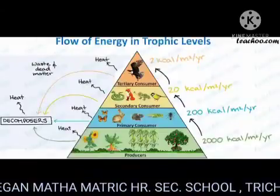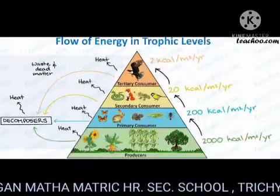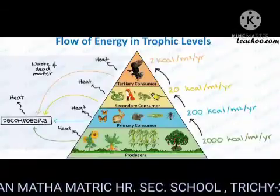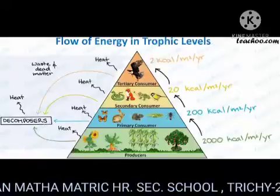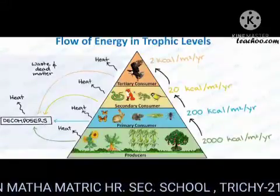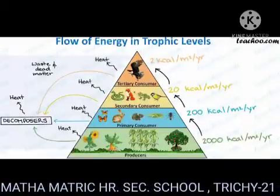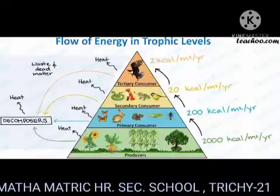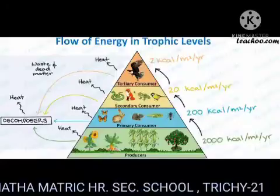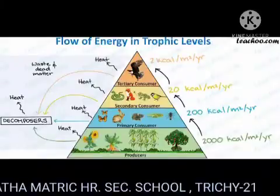Organisms use up to 90% of food energy for their life processes. Only about 10% of energy goes into new body cells and will be available to the next animal when it gets eaten. This loss of energy at each trophic level can be shown by an energy pyramid.